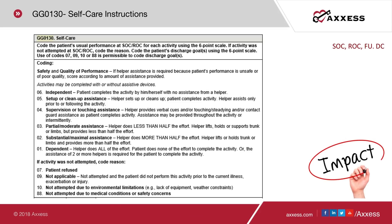These are the self-care instructions for GG0130. Information is collected at start of care, resumption of care, follow-up, and discharge — not the same information at each time point. At follow-up, there is less information to collect. At start of care and resumption of care, code the patient's usual performance for each activity using the six-point scale. If the activity was not attempted, code the reason. Also code the patient's discharge goals using the six-point scale; codes 07, 09, 10, or 88 are permissible for discharge goals as well.